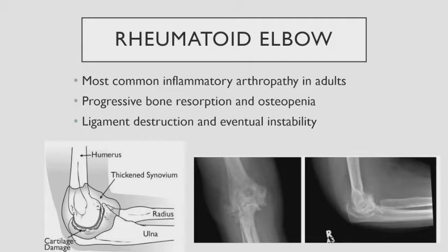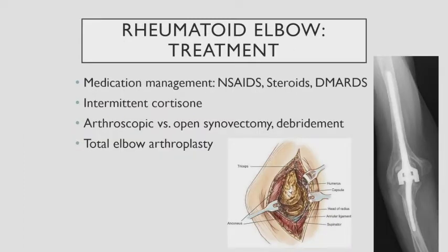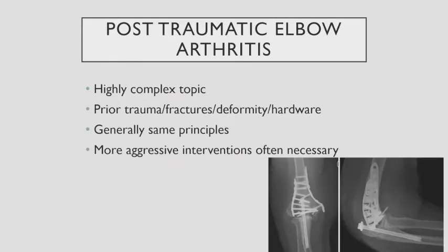Rheumatoid elbow is the most commonly seen inflammatory arthropathy in adults. You'll typically see bone resorption and osteopenia — the elbow looks like it's exploded on the inside, with significant ligament destruction and very floppy, unstable elbows. These patients don't just have pain at end range — they have pain at rest and a very swollen, deformed elbow. We call it moth-eaten bones on x-rays, and they typically have pain at the mid-arc, unlike osteoarthritis where pain is at endpoints. Treatment is largely shifted to rheumatology colleagues; most patients are effectively treated with DMARDs and occasional cortisone injections. Sometimes we do arthroscopic synovectomy, and total elbows are in our armamentarium if needed. Post-traumatic arthritis — prior surgeries, fractures, injuries — usually requires more aggressive treatment.